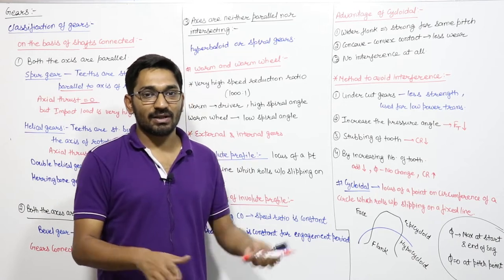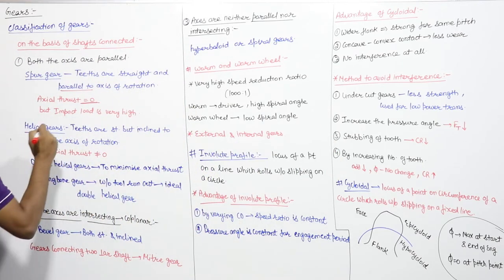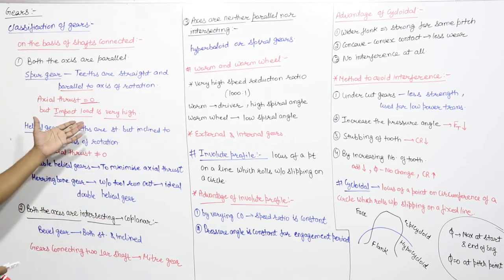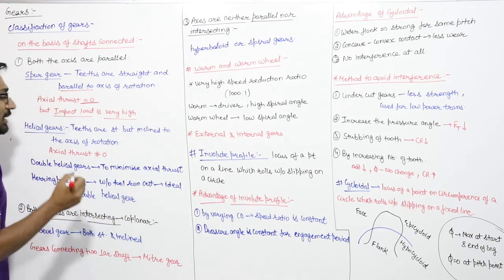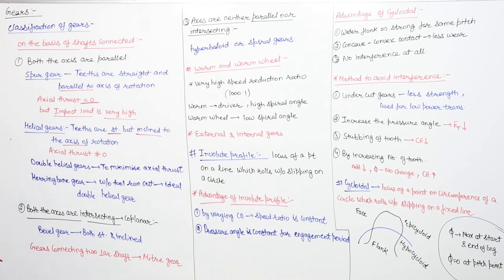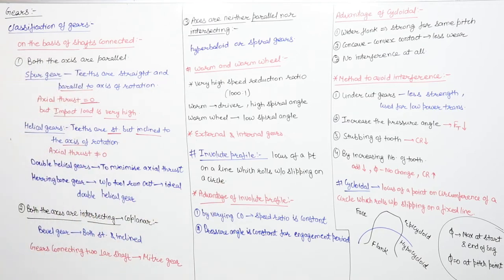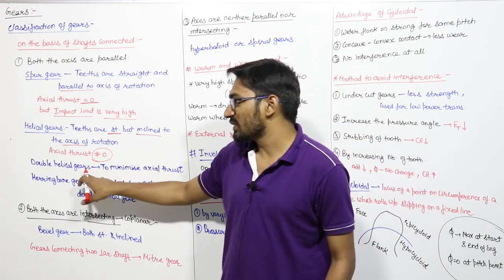The sudden engagement and disengagement in spur gears creates very high impact loads, giving them a high chance of failure. To minimize this impact load, we use helical gears. Helical gears also transmit power between two parallel shafts, but the teeth are inclined to the axis of rotation. This gives gradual engagement and disengagement, eliminating impact load. However, in helical gears axial thrust is not zero.